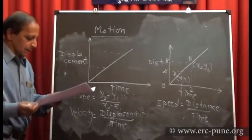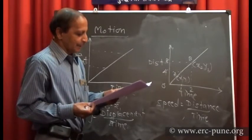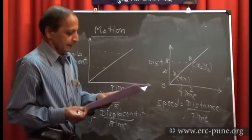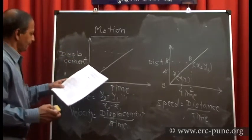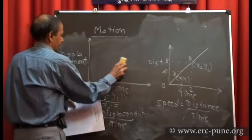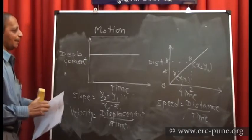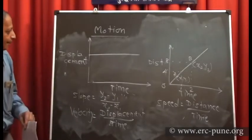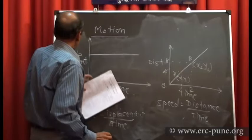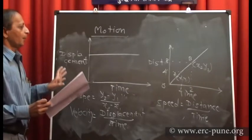Question number 5: if the displacement-time graph of a particle is parallel to the time axis, the displacement is not changing. So automatically we can say that the body is at rest.